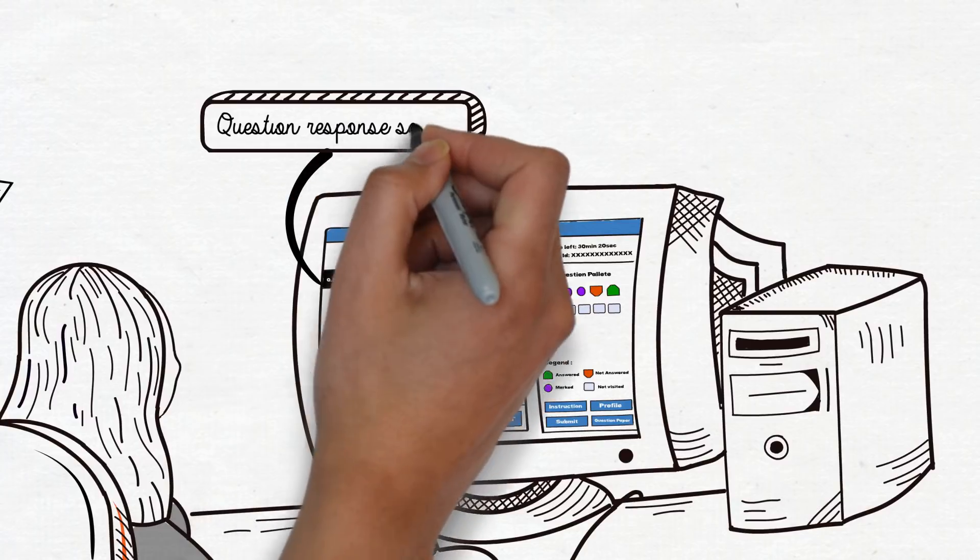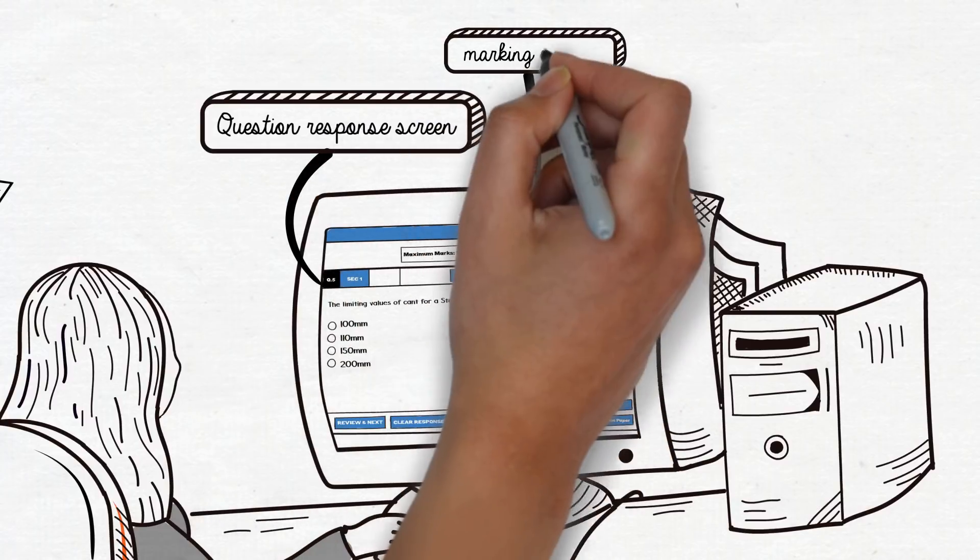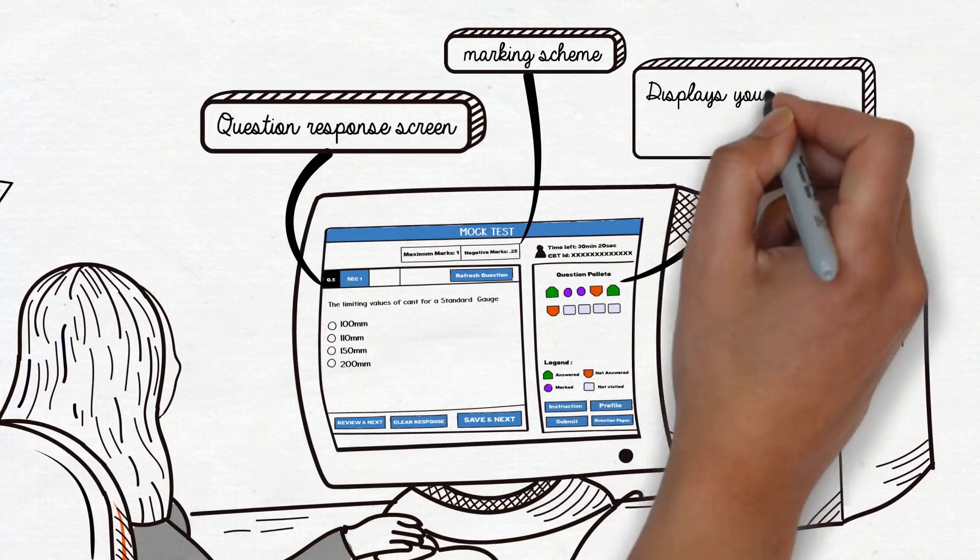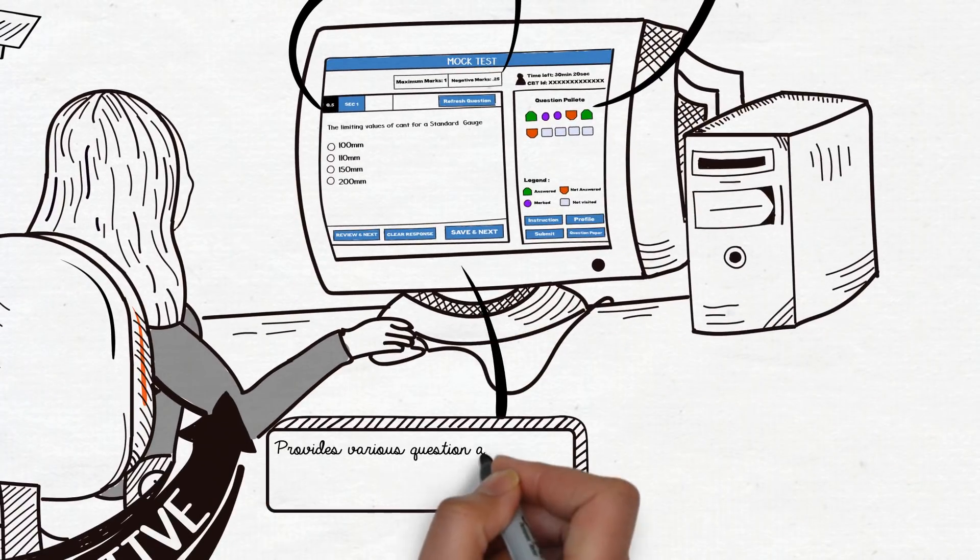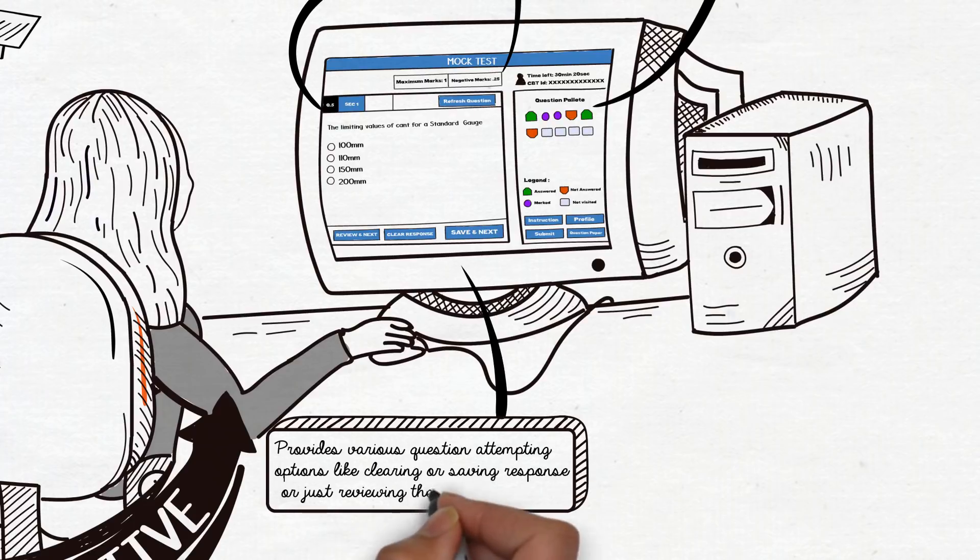It contains a question-response screen for attempting questions, marking scheme, and it also displays your question-attempting information. And the bottom part of the screen provides various question-attempting options, like clearing or saving response, or just reviewing the question.